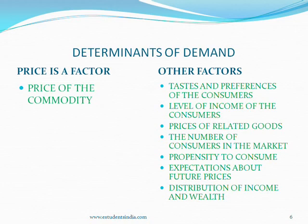Third, changes in the prices of related goods: the demand for a good is affected by the prices of substitutes or complements. For example, tea and coffee are close substitutes. When coffee becomes cheaper, the consumer substitutes coffee for tea, so the demand for tea declines. Cars and petrol are complementary goods. When the price of cars falls, demand for cars will increase, which in turn will increase the demand for petrol.